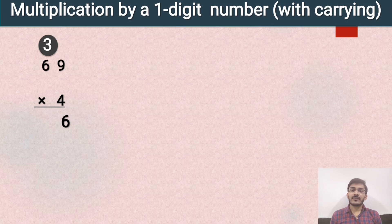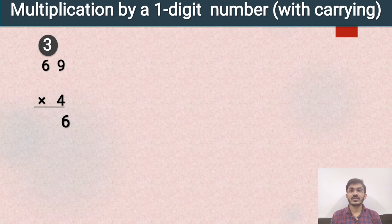And 3 we will carry forward to the next digit. Now we will multiply 4 with the tens place, means with 6. 4 sixes are 24. But what about this carry? We will add that carry to the multiplication of 6 and 4. 6 fours are 24, and 24 plus 3 is equal to 27. So our final answer will be 276.